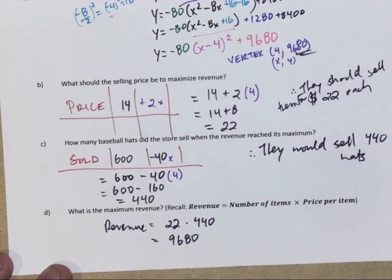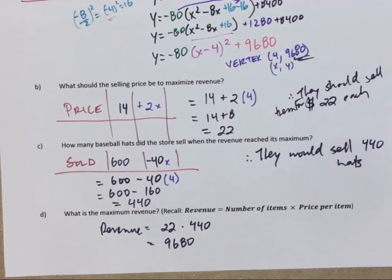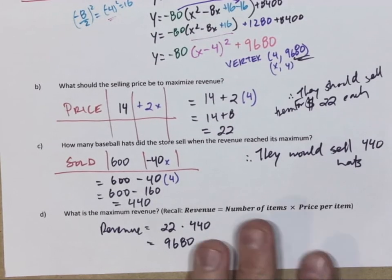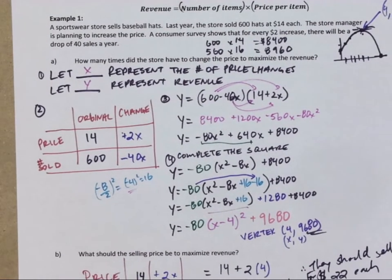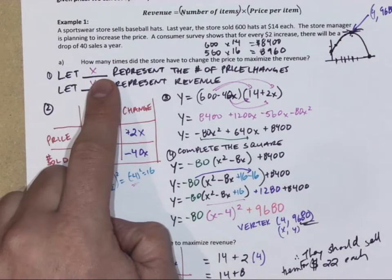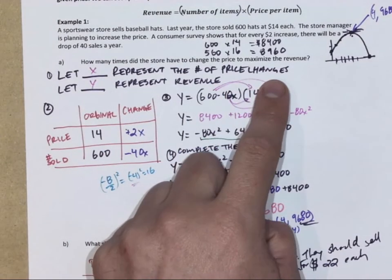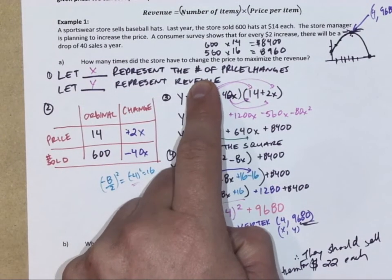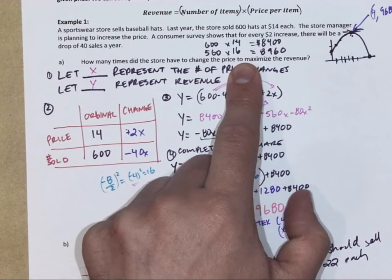Now completing the square seems like a little bit of work. So I'm going to do the next example a different way. But just think about it, and the main thing, when you see revenue questions, let statements where X is the number of price changes, or the number of times we're going to change the price.